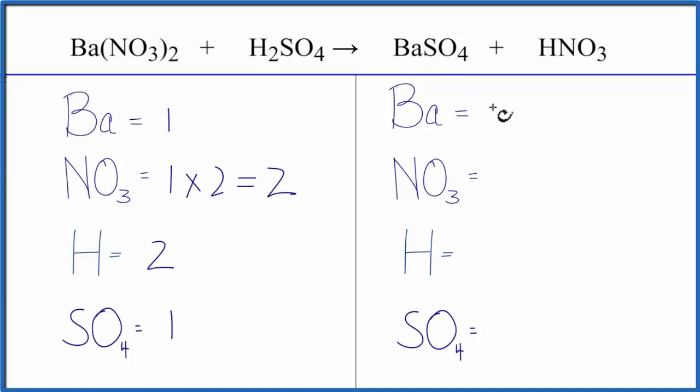On the product side we have one Ba, one nitrate, one hydrogen, and then SO4, one sulfate.